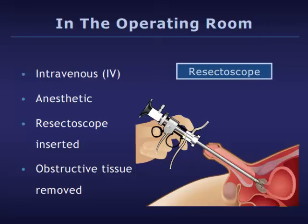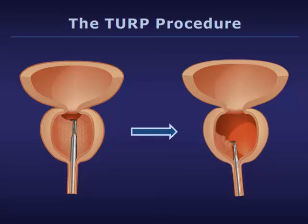The surgeon will insert a small instrument called a resectoscope up through the urethra and towards the prostate. The resectoscope is used to remove the obstructing prostate tissue. These images show how the resectoscope device is used to clear away the obstructing prostate tissue.